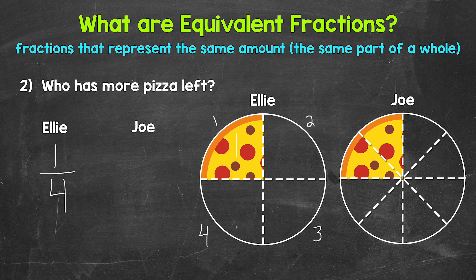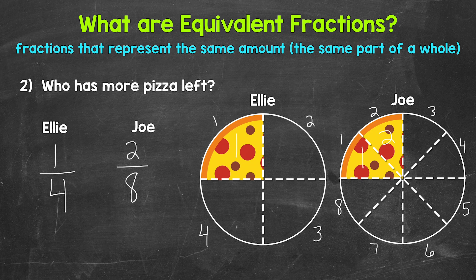Now for Joe's pizza. Joe's pizza was divided into eight equal slices, so eight is the denominator. Two slices are left, so two is the numerator. Two eighths of Joe's pizza is left. One fourth and two eighths are equivalent — those fractions represent the same amount, the same part of the whole pizza. We can see that Ellie and Joe have the same amount of pizza left, even though we have different fractions.